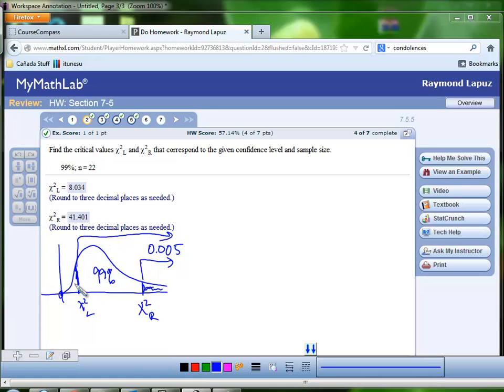And this one has an area to the left of 0.005, but then that would make the area to the right of that particular point 0.995. So those are two important numbers that we're going to need to remember.